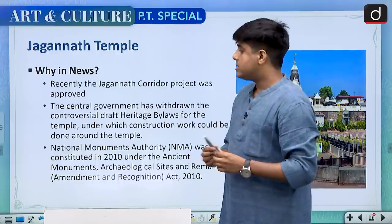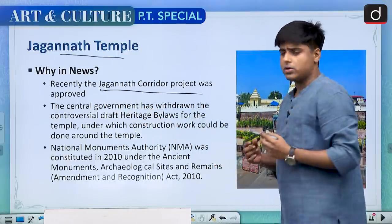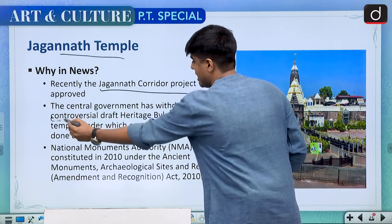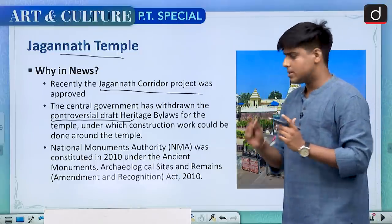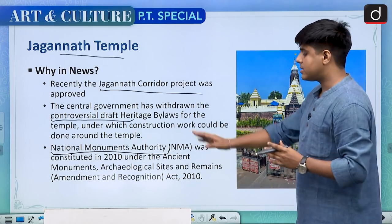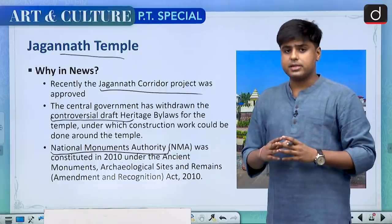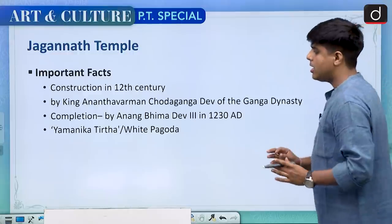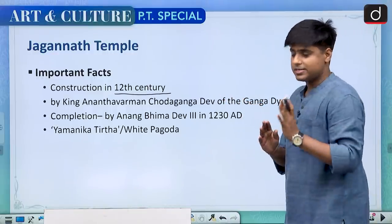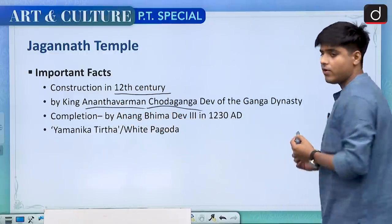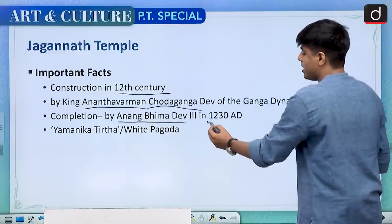Another temple important this year is the Jagannath temple. This was in news because the Jagannath corridor project was approved, but a controversial draft which banned any construction within a certain area of the temple was taken back by the central government. This draft was prepared by the National Monuments Authority, which is the statutory body constituted in 2010 under the Ancient Monuments Archaeological Sites and Remains Amendment and Recognition Act 2010. The temple was constructed in the 12th century — Lingaraj 11th, Jagannath 12th, Ramappa 13th. It was constructed by Anantvarman Chodh Ganga Dev of the Ganga dynasty, also known as the Eastern Ganga dynasty, and completed by Anangabhima Dev in 1230 AD.